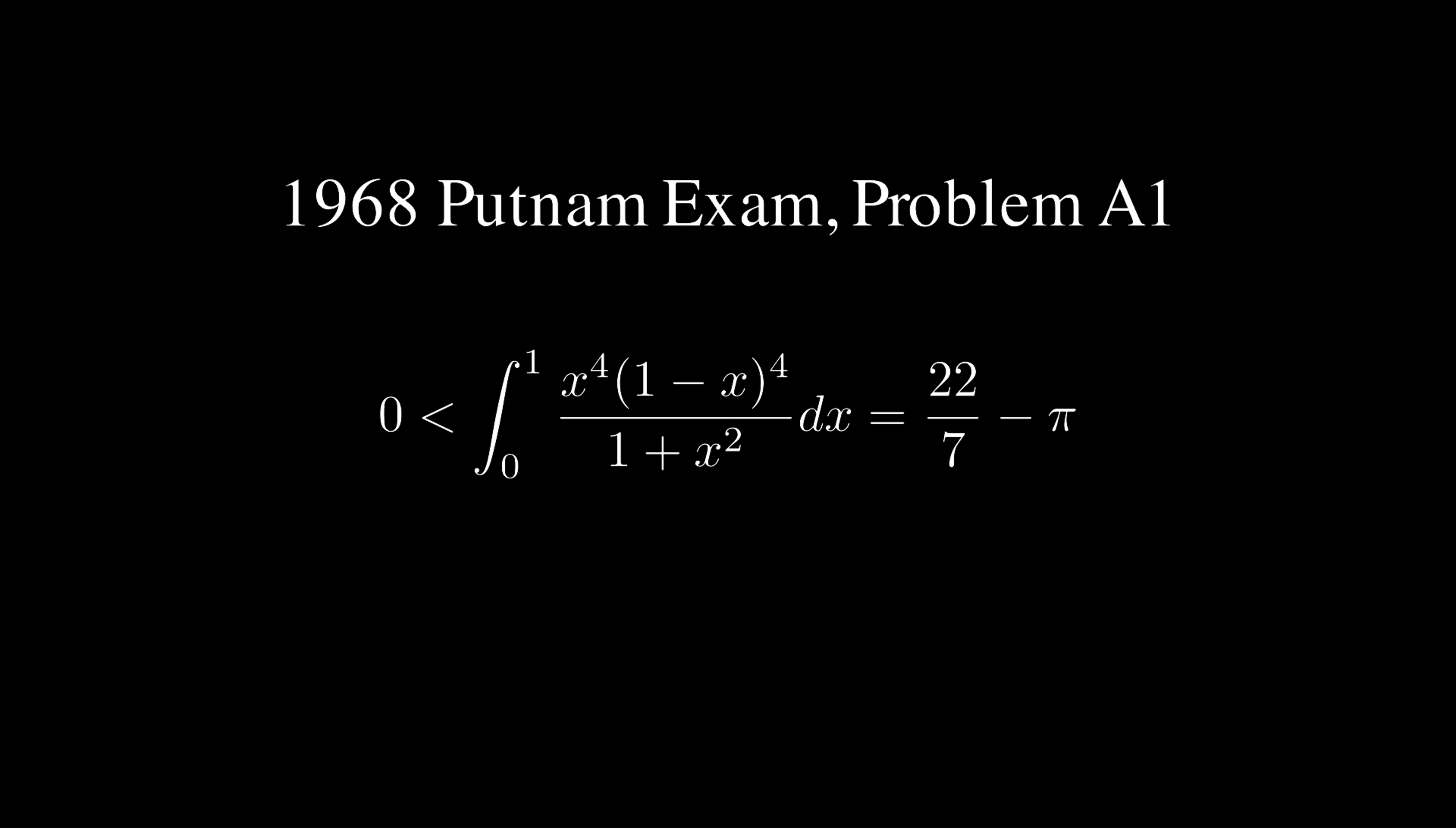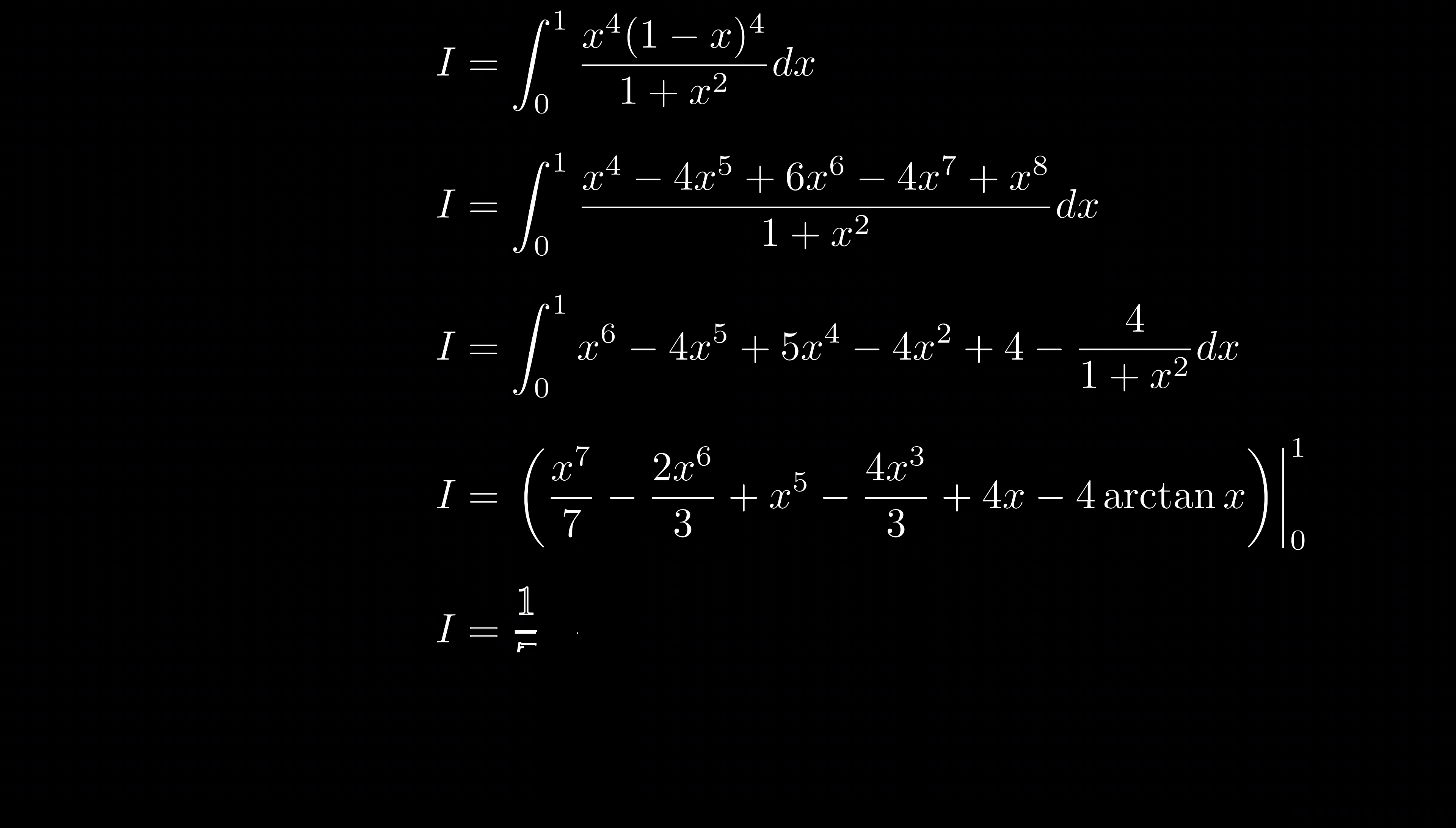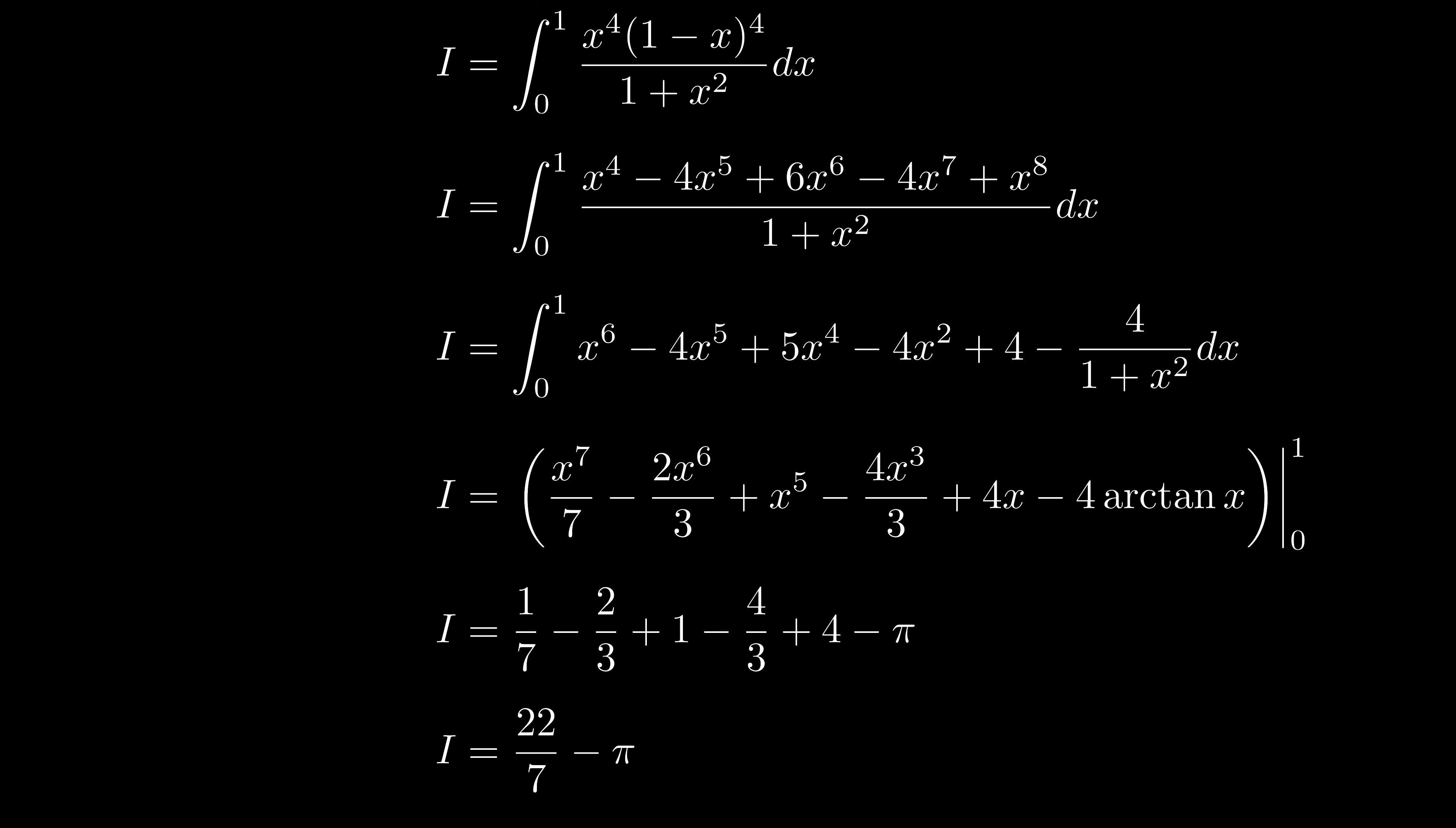Pause the video and give it a try. I promise you it's not that difficult. The integral is strictly greater than zero, but its upper bound is associated with pi. One over one plus x squared is the antiderivative of arctangent x. This is where the pi comes from, and the numbers are reduced to 22 over 7 nicely, which has been the best pi approximation for humankind for thousands of years.